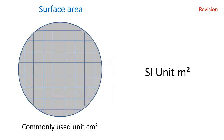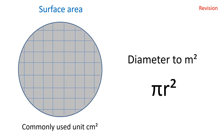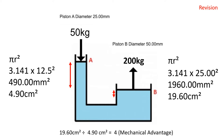The SI unit used for surface area is meters squared. For convenience, hydraulic engineers commonly use centimeters squared. Using pi r squared to convert diameters to surface area: a diameter of 25 millimeters gives a surface area of 4.9 cm², and piston B with a diameter of 50 millimeters gives 19.6 cm². So 19.6 divided by 4.9 gives us a mechanical advantage of 4.